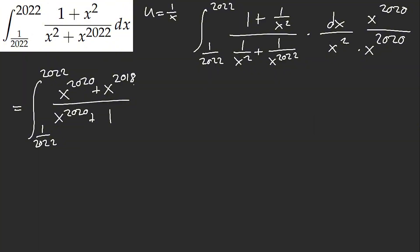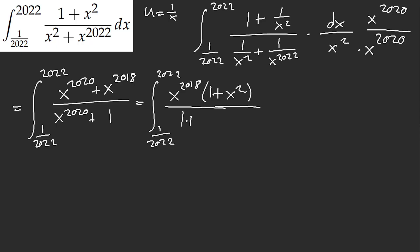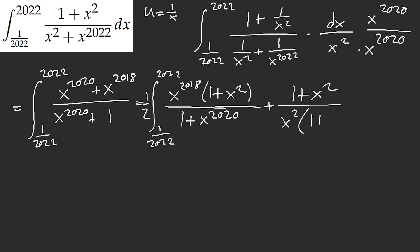What is this going to do for us? What do we do after this? Well, what if we try to add it to the original integral? So let's give it a half and add them together. We can technically factor x squared out and we get 1 plus x to the power of 20.